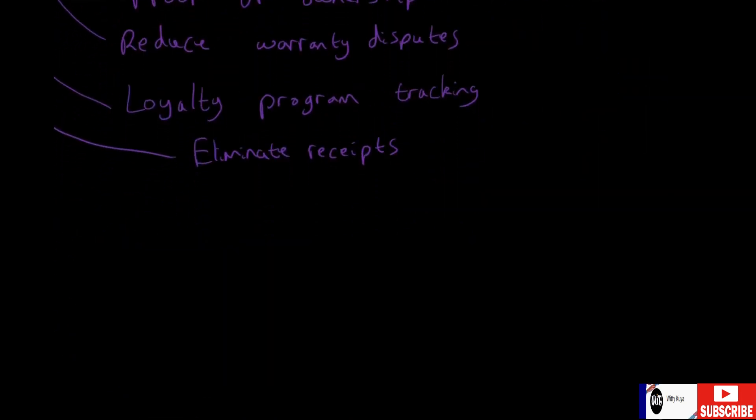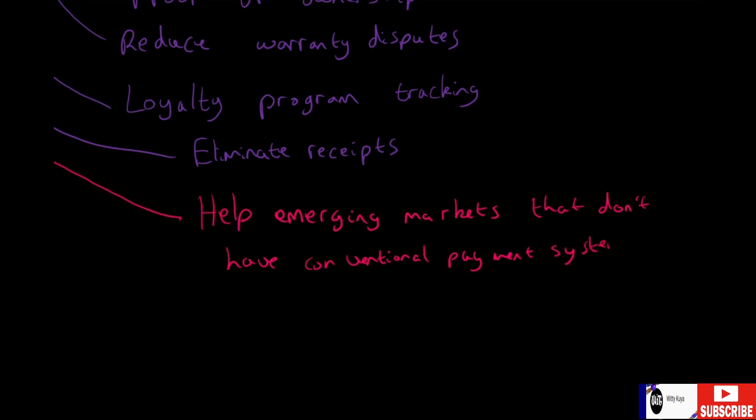And to celebrate us almost finishing, I'll use a different color—this pinky red color. This can also help emerging markets that don't have conventional payment systems. There are countries around the world or places within a country, maybe a village, that doesn't have a bank system, that doesn't have a conventional money-based system. It'll help them track and get hold of these items because you'll find places that don't have certain basic levels of economics but they have phones.